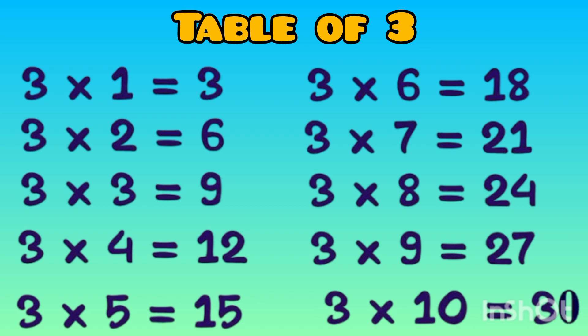3 1s a 3, 3 2s a 6, 3 3s a 9, 3 4s a 12, 3 5s a 15, 3 6s a 18, 3 7s a 21, 3 8s a 24, 3 9s a 27, 3 10s a 30.